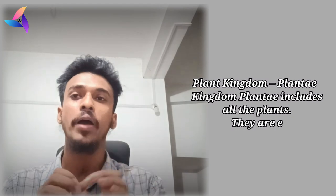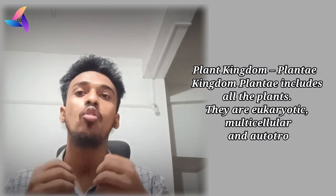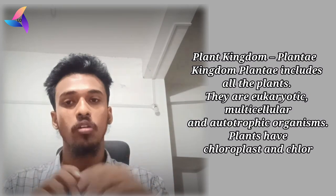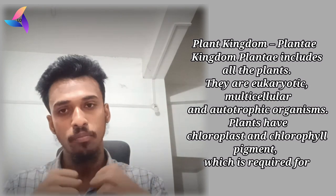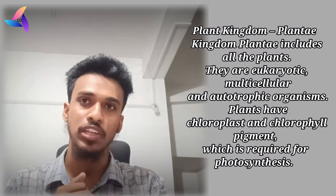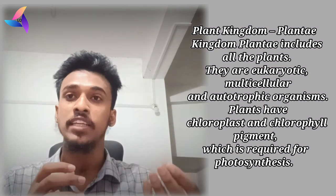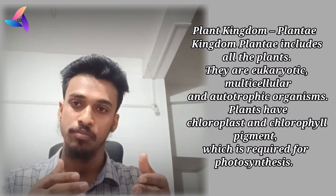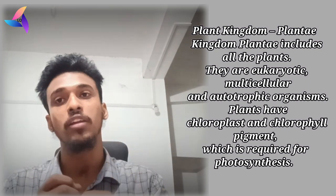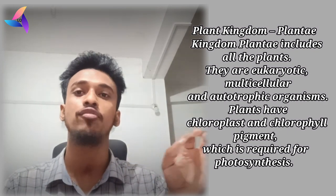Kingdom Plantae includes all the plants. They are eukaryotic, multicellular, and autotrophic organisms. Plants have chloroplasts and chlorophyll pigments which are required for photosynthesis.